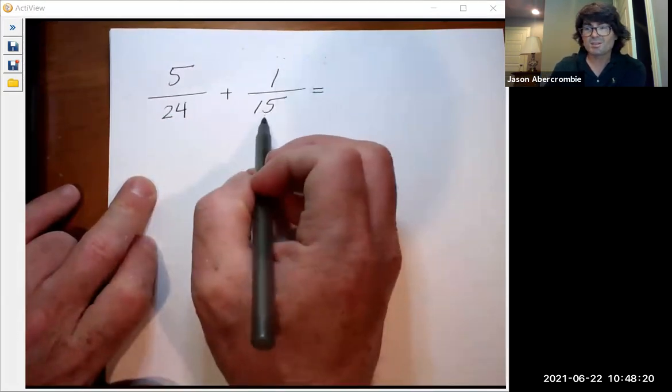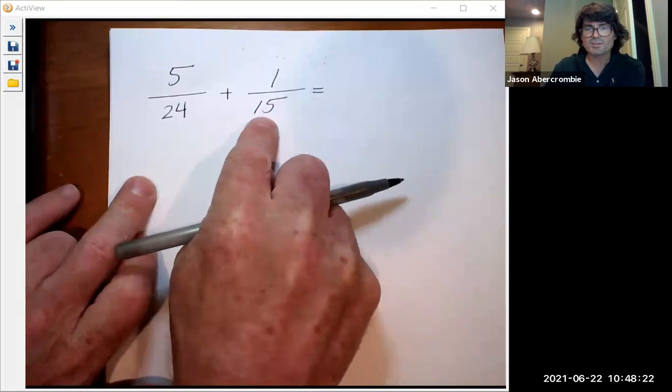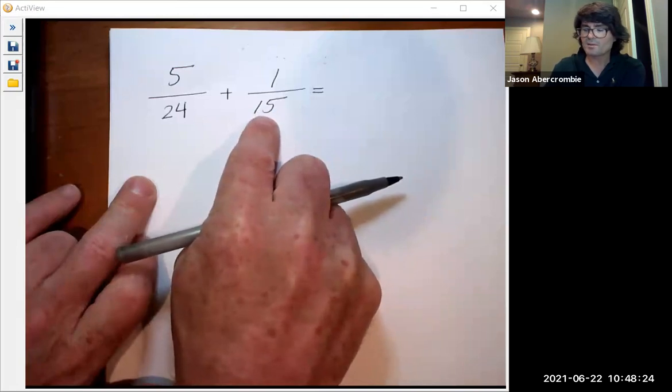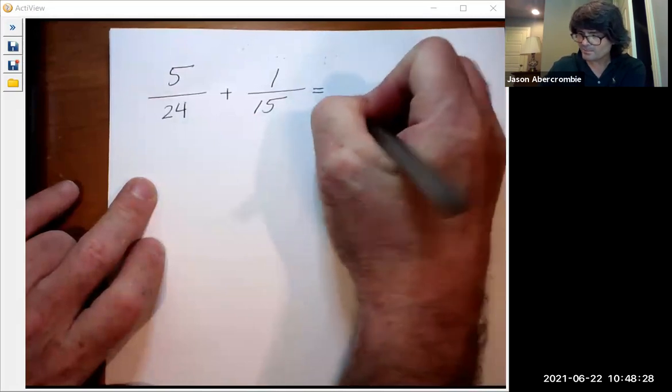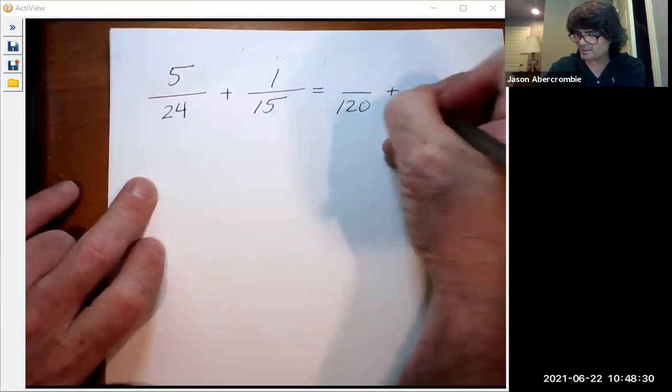Again, look at the smaller number and take out the three, which leaves you five. And then multiply it times the other number, and that's 120. 120 is going to be an easier common denominator.